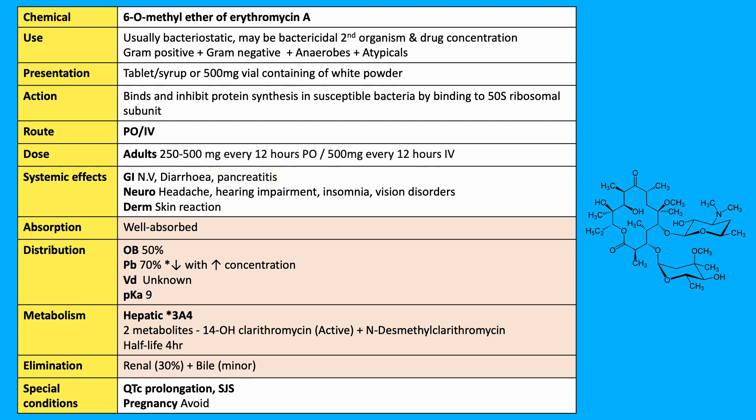It's presented as either a tablet, liquid, or vial containing 500mg of off-white powder, which requires reconstitution and dilution to a concentration of 2mg per ml to enable infusion via a large proximal vein over 60 minutes.